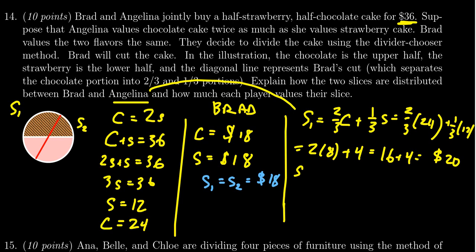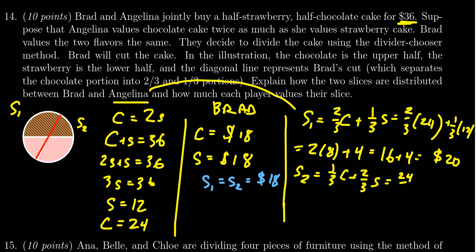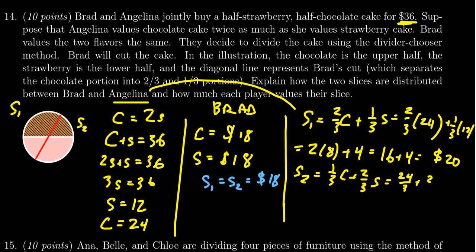And then how about the second slice, s2 here? Well, it has one-third the chocolate plus it has two-thirds the strawberry, for which we can go through the details of this again. You get 24 over 3 plus 2 times 12 over 3.